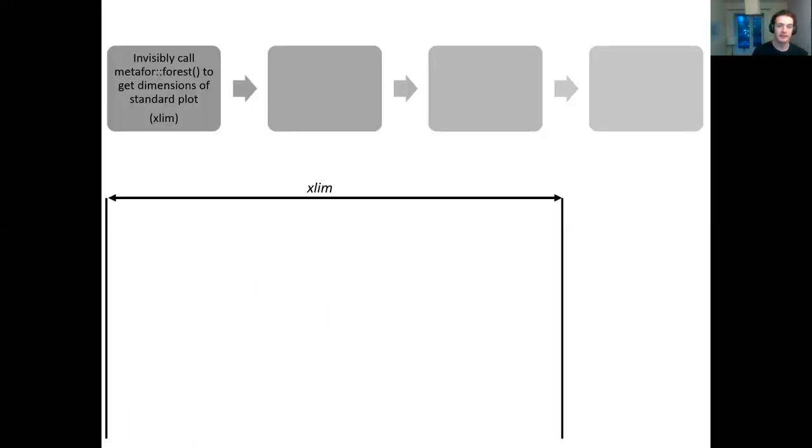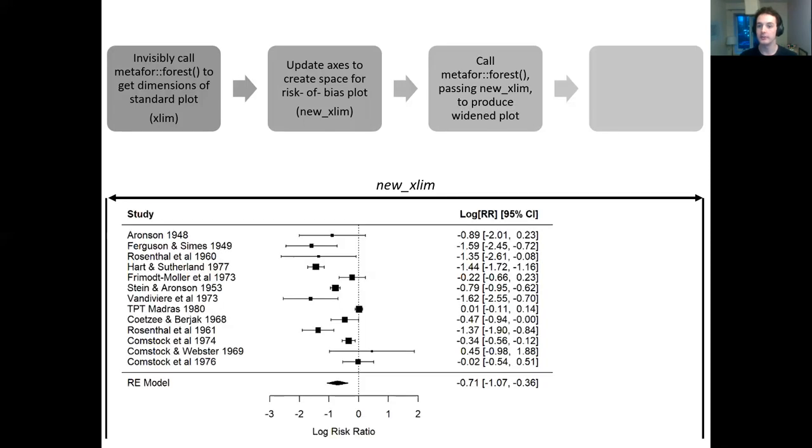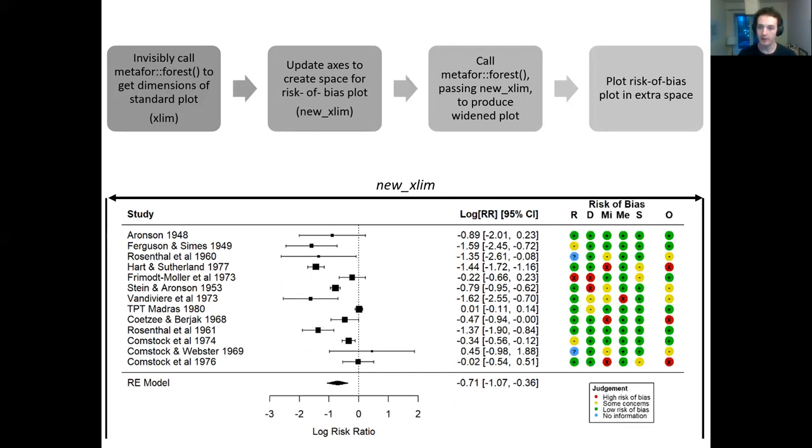I've taken a four step approach to working with this data to append risk of bias plots to the standard metafor forest output. First is to invisibly call metafor forest to get the dimensions of the standard plot. We then expand these limits to create some space around the standard plot and pass this new limit as an argument to metafor forest. This produces a standard metafor forest output with a lot of space on the right hand side, as you can see. The final step is to plot the risk of bias plot in this extra space that we've created.